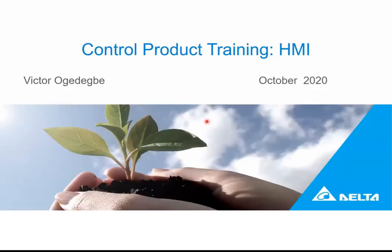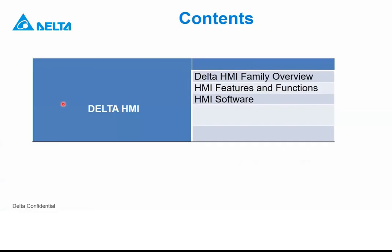Today we are looking at HMI. My name is Victor and I work here at Delta Electronics in the department of control products. We are going to be looking at one of the control products called HMI — human machine interface. Our course outline is introductory: an overview of the HMI we have in Delta, an overview of HMI features, and then a look at the software and how you can program the HMI.